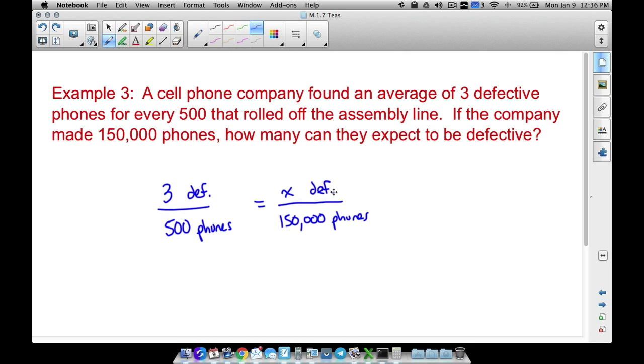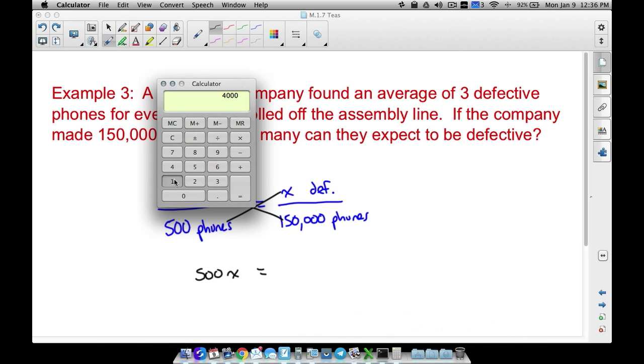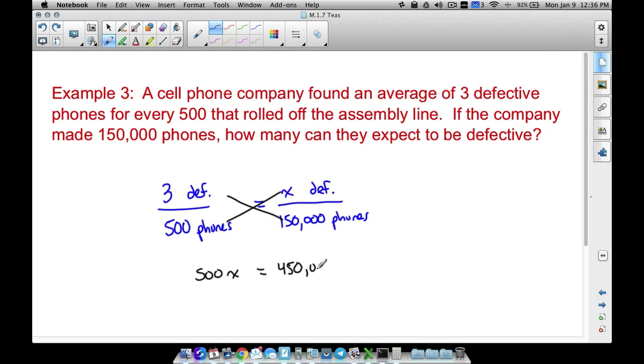So I'm going to put an X there and we can solve this by cross multiplying both ways. So three times 150,000. It doesn't matter which one you do first, by the way. I can do this way first. 500 times X is 500X. Cross multiplying the other way, 150,000 times three. That's going to be 450,000. Again, all I did there was take three times 150,000, divide both sides by 500 to get X by itself. Notice I am dividing by the number that's in front of X. We will talk more about equations a little bit later in this series.